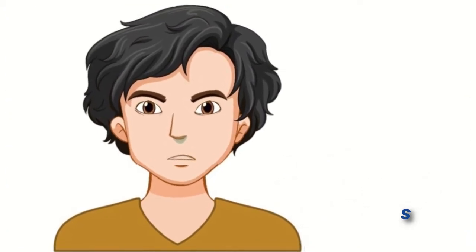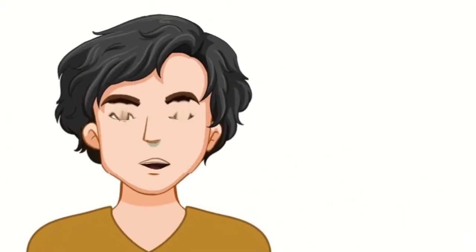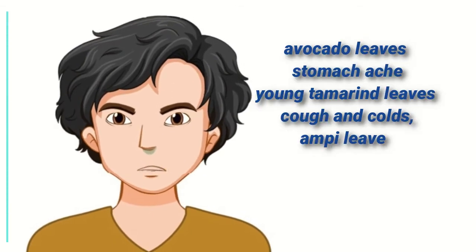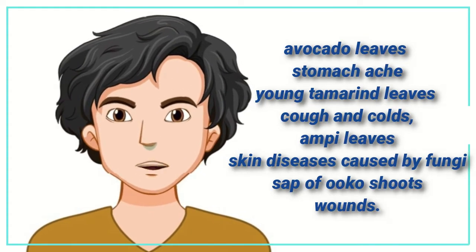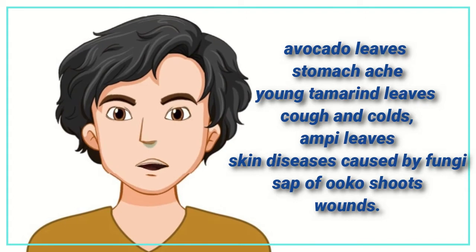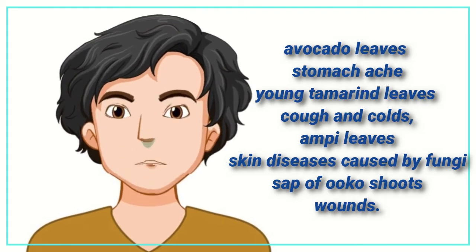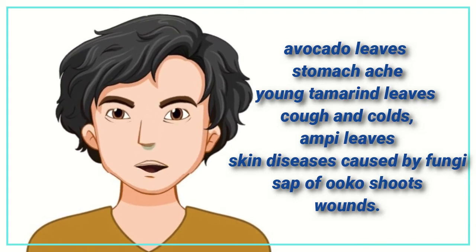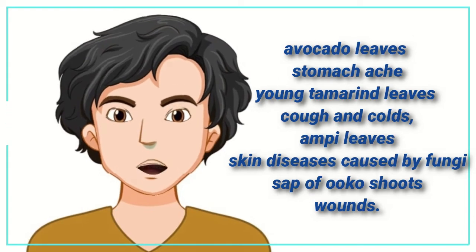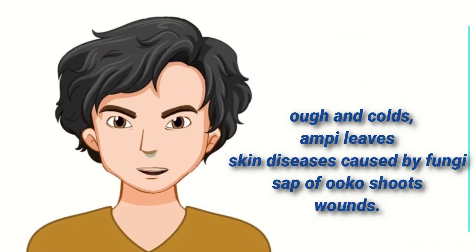Their traditional medicine include avocado leaves to cure stomach ache, young tamarind leaves to cure cough and colds, ampi leaves to cure skin diseases caused by fungi, and sap of oako shoots to treat wounds.